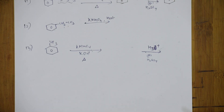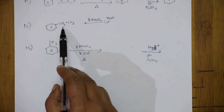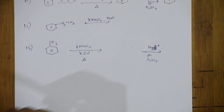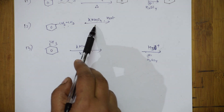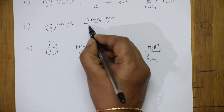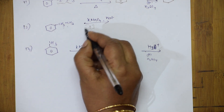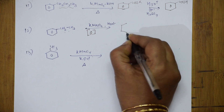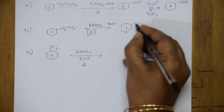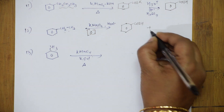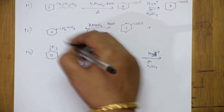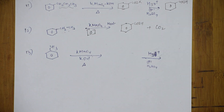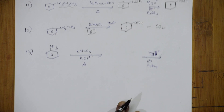If KOH is missing, KMnO4 acts as an oxidizing agent and oxidizes the alkyl group directly. You get benzoic acid, and the leftover carbon comes out as carbon dioxide.